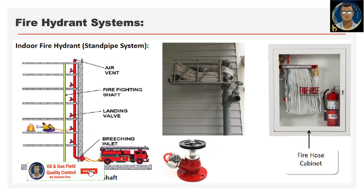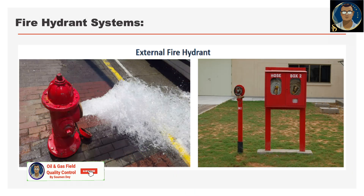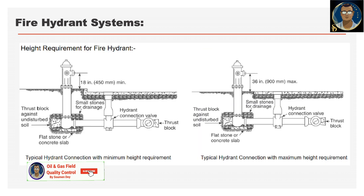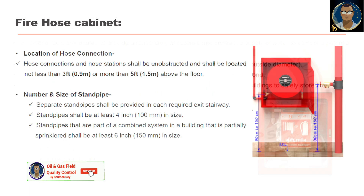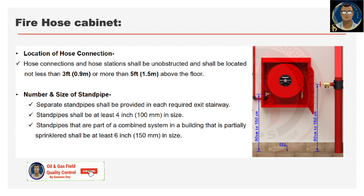The fire hose cabinet is where we fold the hose and keep it safely for immediate emergency use. These reels are located to provide a reasonably accessible and controlled supply of water to combat a potential fire risk. The length of a fully extended fire hose is 36 meters with a diameter of 19 mm outside diameter. The appliances are designed to deliver a minimum of 0.33 liters of water per second. The fire cabinet is designed for theft and vandalism protection in public areas, to safely store fire equipment such as fire hose rack assembly, fire hose reel and fire extinguisher. Components include fire hose rack, hose reels, hose nozzles and hose connection. Hose connections and hose stations shall be unobstructed and located not less than 3 feet or more than 5 feet above the floor.